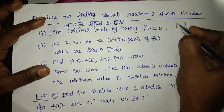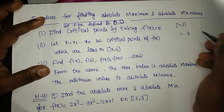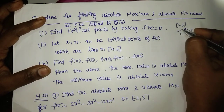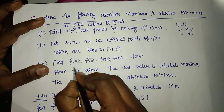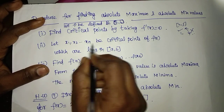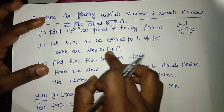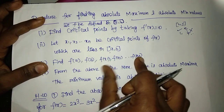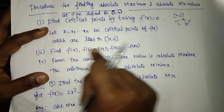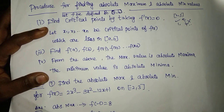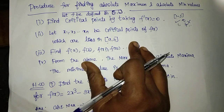Suppose the interval is [2, 3]. If you find the critical points are 1 and 4, then 4 is outside [2, 3], so we exclude 4 and keep 1. We select only the critical points that lie within the interval. Then we find the function values at those critical points. Comparing those values: the maximum value is the absolute maximum, and the minimum is the absolute minimum. This is a very simple process.